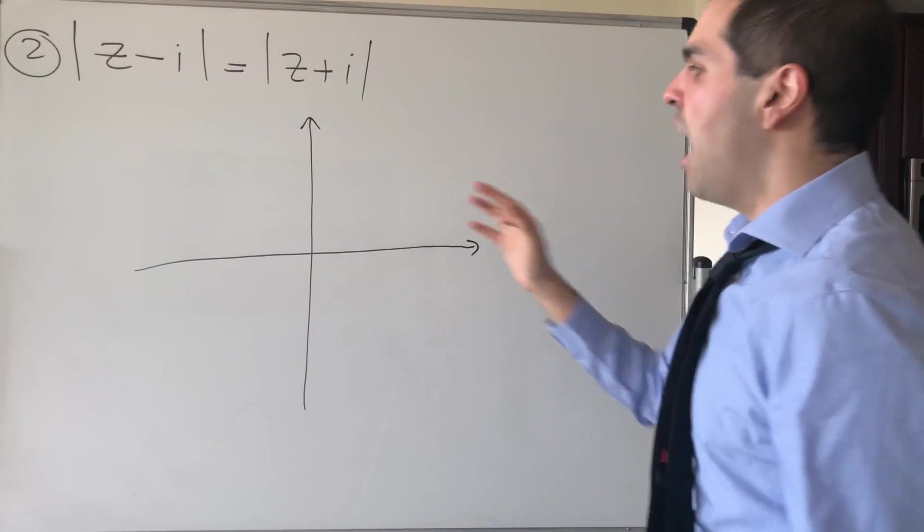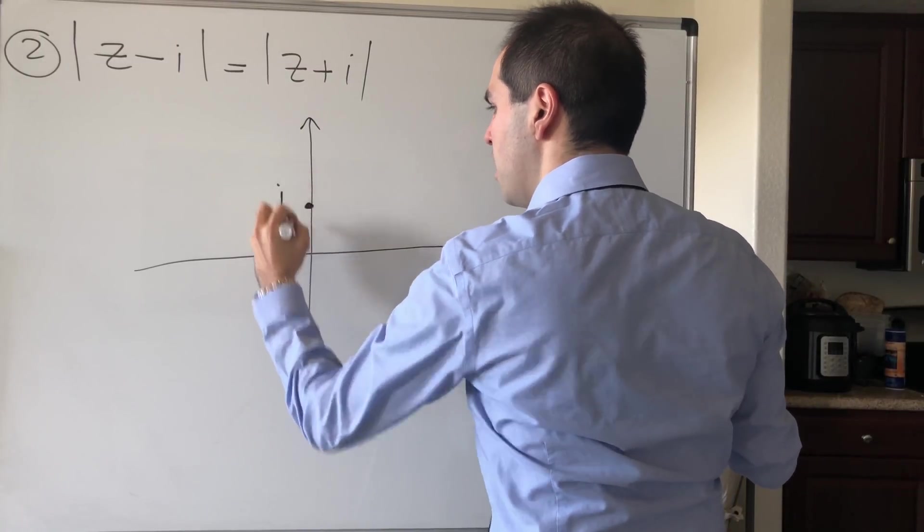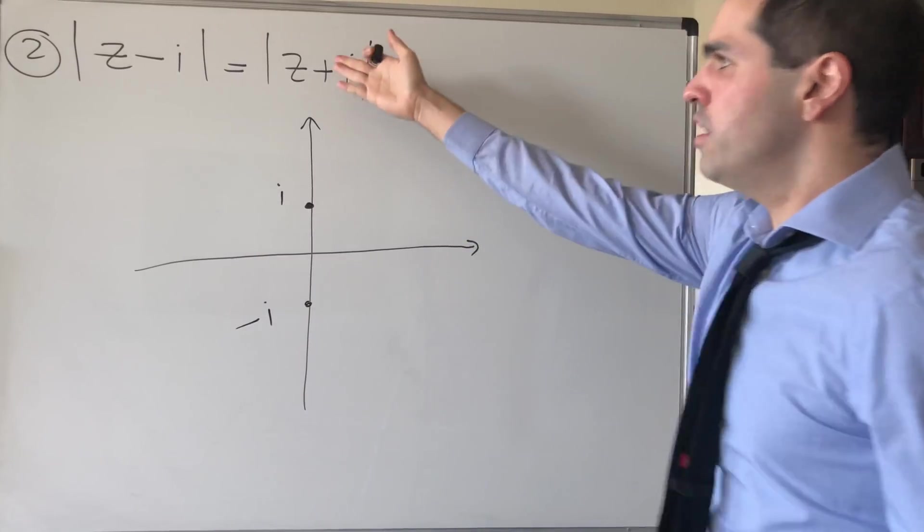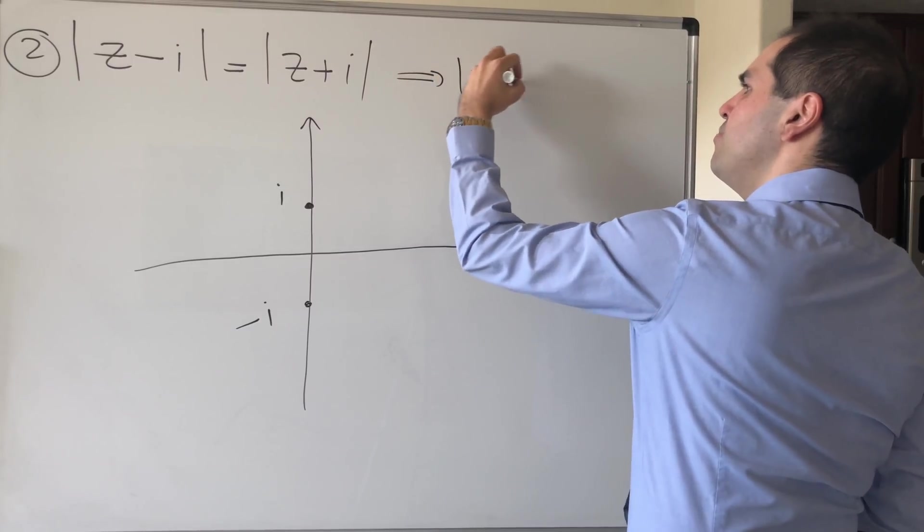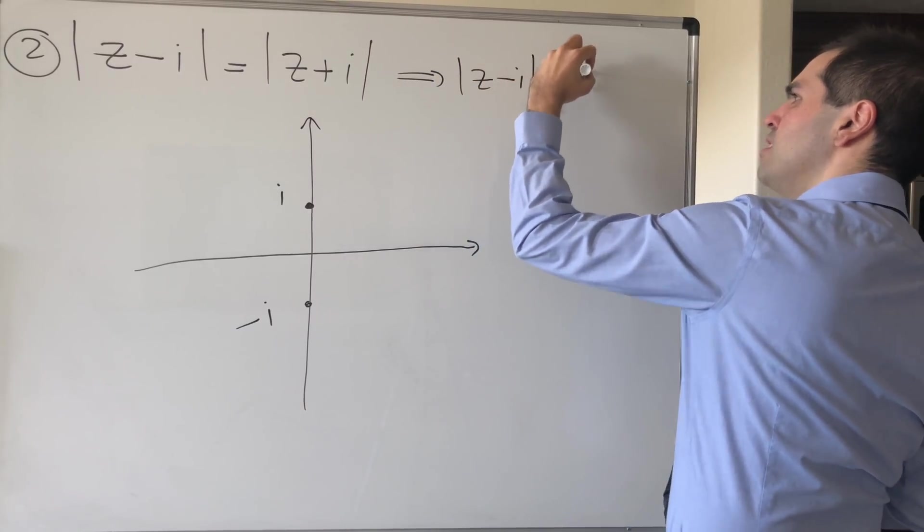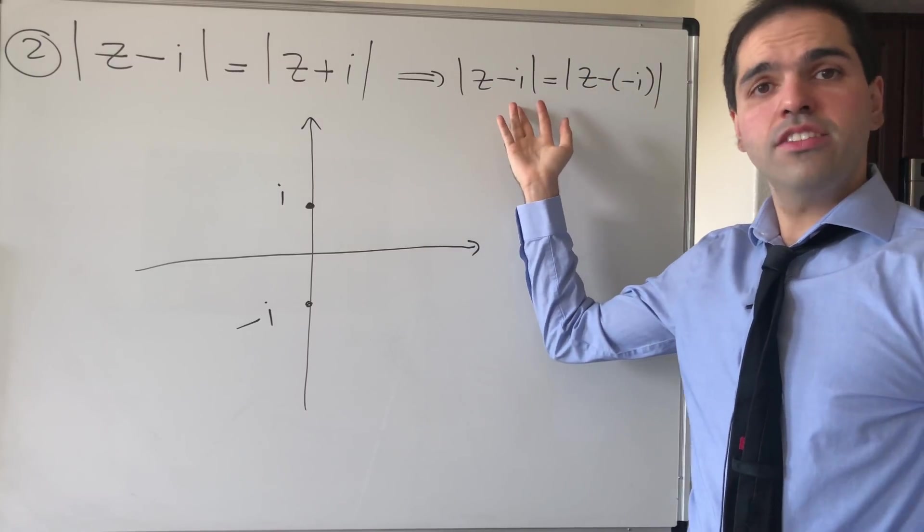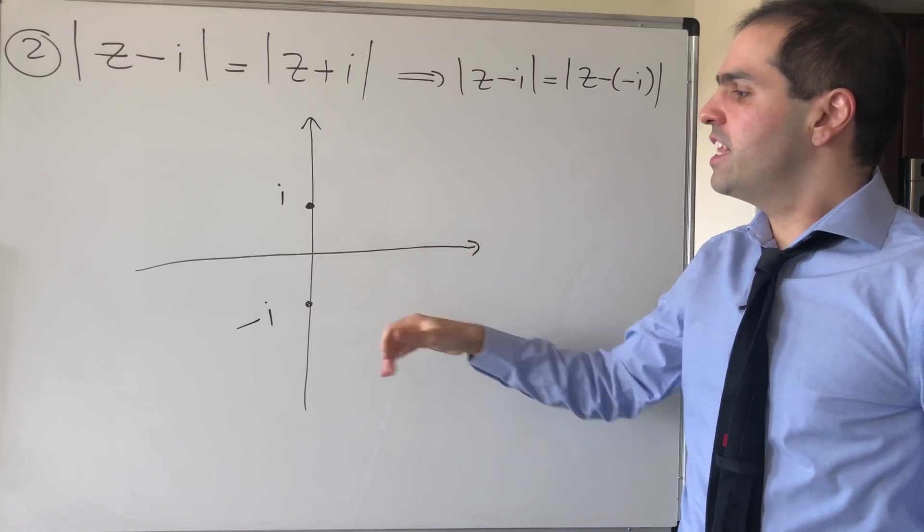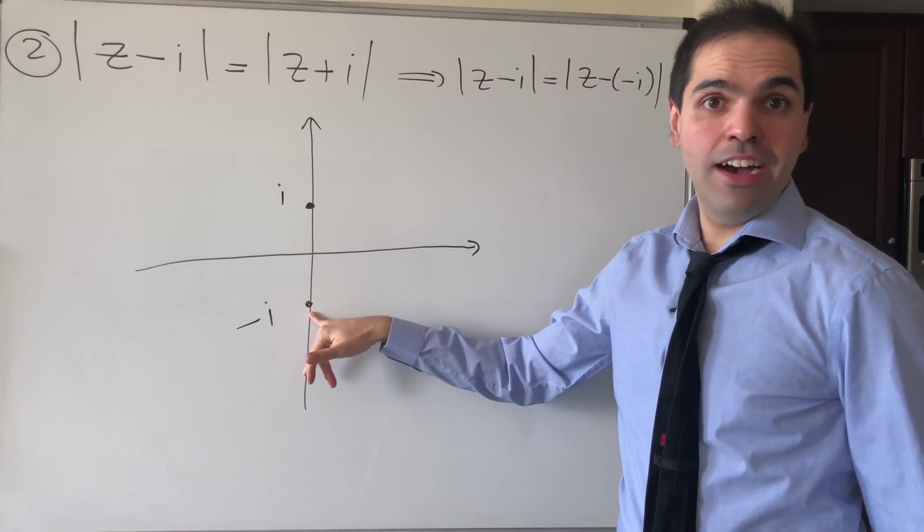Then, well, i is here, and minus i is here. And notice what this is saying. Well, another way of writing this is simply z minus i equals z minus minus i. So, you're really asking yourselves, which points have the property that they're the same distance away from i and the minus i?